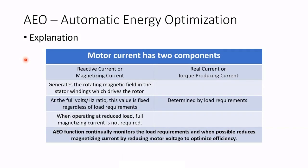AEO — the automatic energy optimization. Let's understand first that motor current has two components: the reactive current, also called the magnetizing current, and the real current, also called the torque-producing current. The magnetizing current generates the rotating magnetic field in the stator windings which drives the rotor — basically makes a big spinning magnet. At the full volts-to-hertz ratio, that magnetizing current is fixed, regardless of the load.